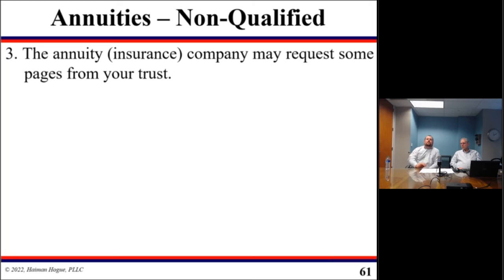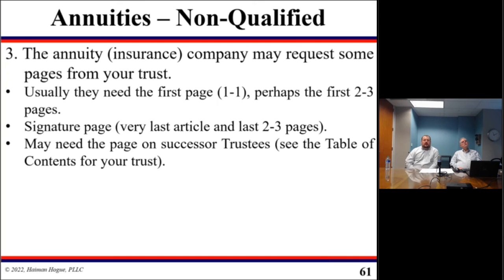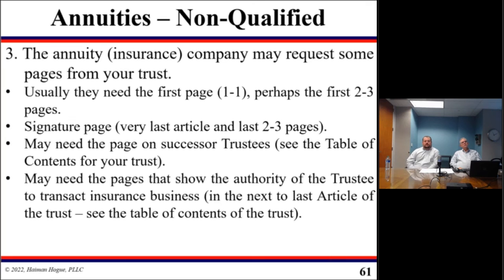The annuity company may request some pages from your trust. They will typically require the first page and then the signature page. They'll also require the page that shows who your successor trustees are that would have access to the trust, and the pages that show your trustee actually has authority to deal with insurance transactions in Texas.